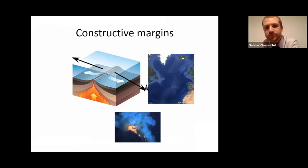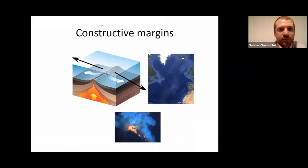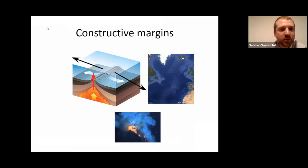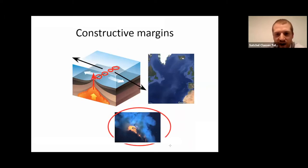Here, magma will rise up through this gap and it will cool either side, so all along this ridge — this raised ridge made up of cooled magma — you will find little volcanoes all the way along. Some of these will be submarine volcanoes, which is underwater, from rapidly cooling magma.